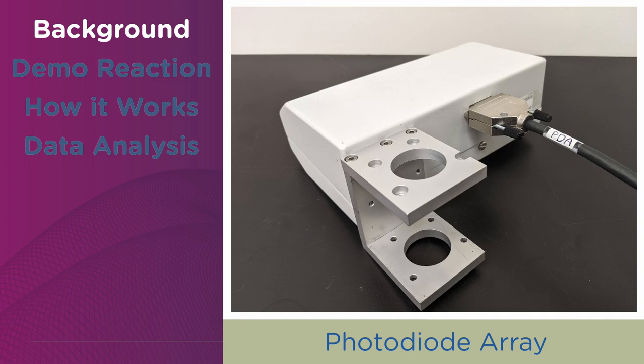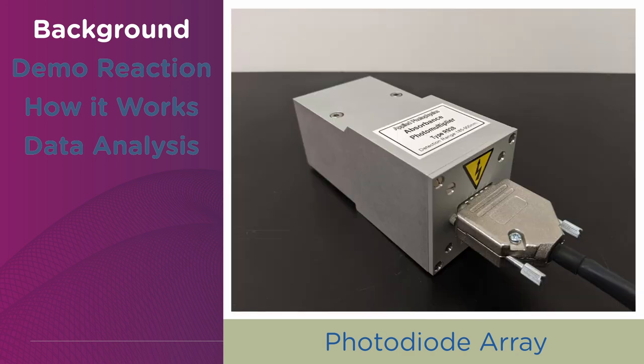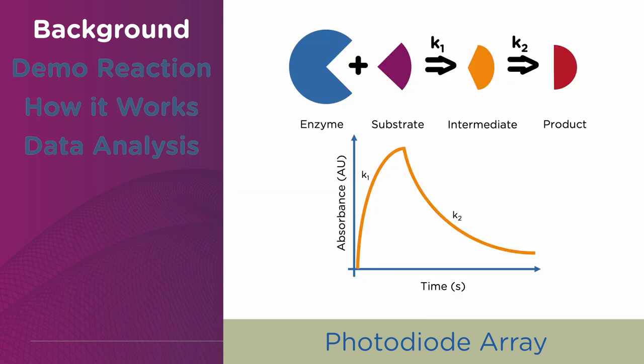The photodiode array accessory allows capturing full absorbance spectra changes instead of changes at an individual wavelength with a standard absorbance detector. The PDA is best used for enzyme kinetics reactions with several intermediates, where detection of various chromophores can be done in a single experimental run.